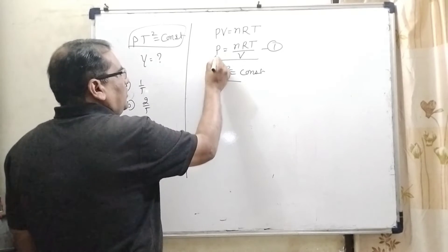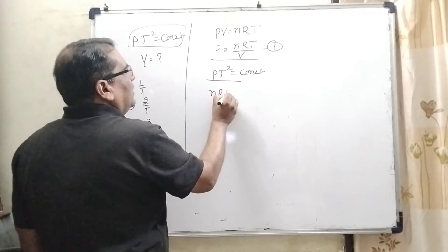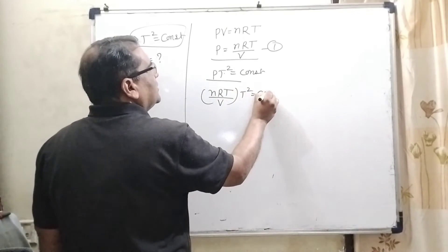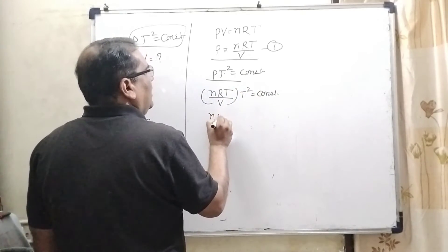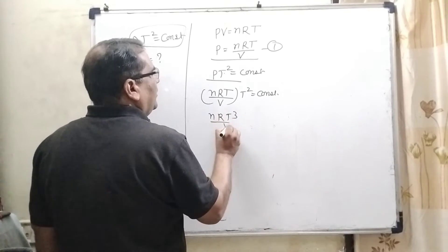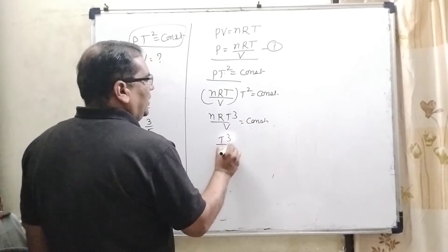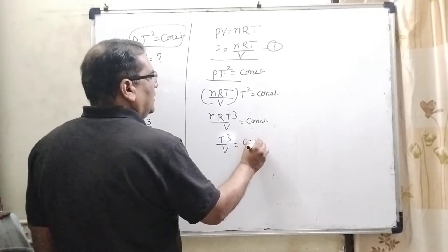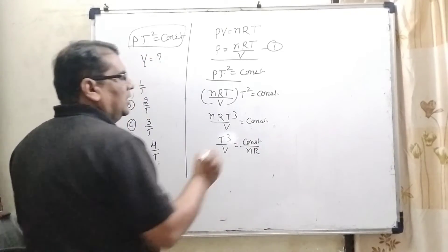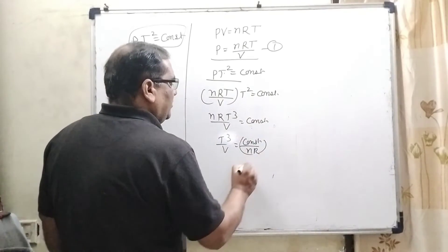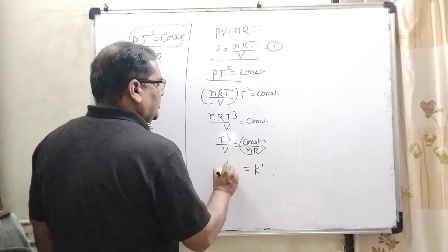What is the value of P? nRT/V, and T² equals constant. Now nRT³/V = constant. Then T³/V = constant/nR. Here constant/nR is also constant, so it can be considered K'.